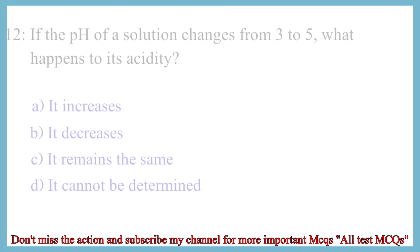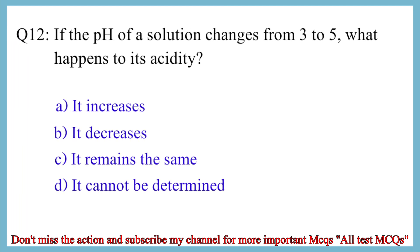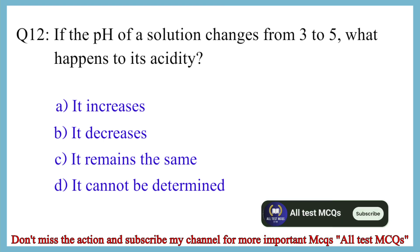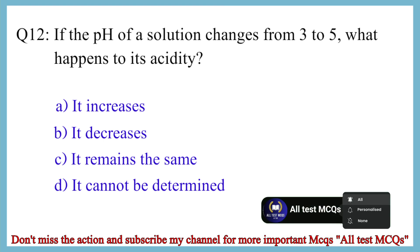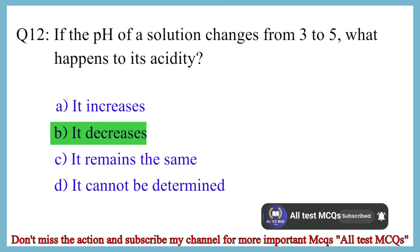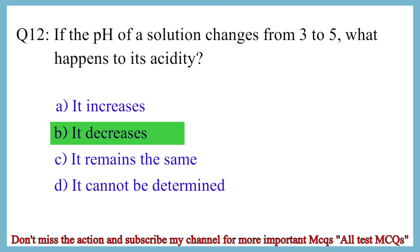Question No. 12. If the pH of a solution changes from 3 to 5, what happens to its acidity? The correct answer is option B: It decreases.